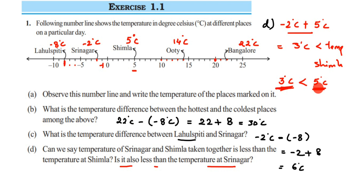So the answer to the first part is yes. For the second part, they ask: is it also less than the temperature of Srinagar? Srinagar's temperature is minus 2 degrees Celsius, but 3 degrees Celsius is greater than minus 2, because positive numbers are always greater than negative numbers. So the answer to the second part is no — the combined temperature is greater than Srinagar's temperature, so that statement is false.